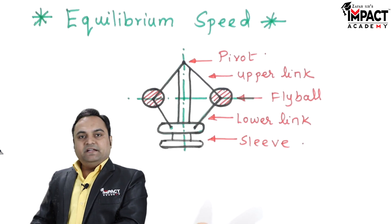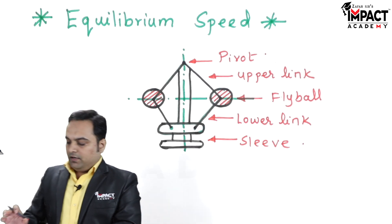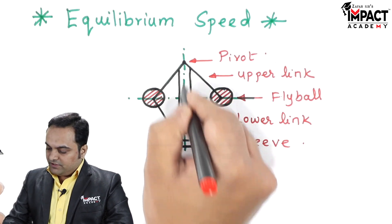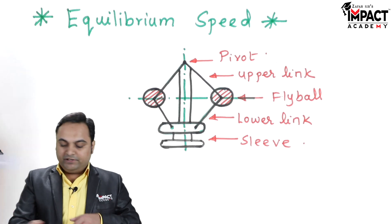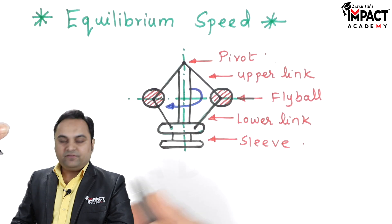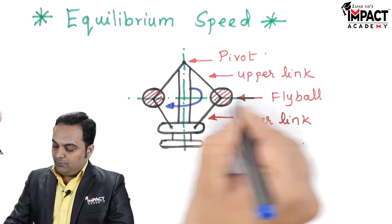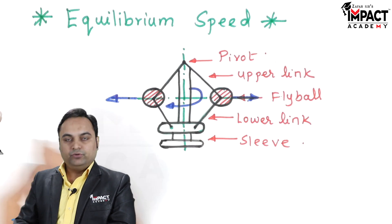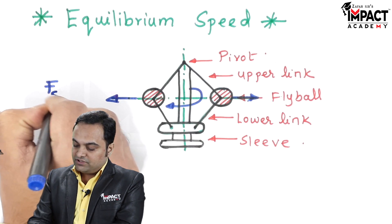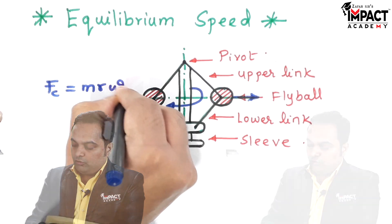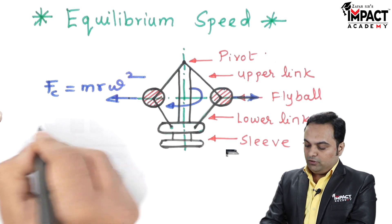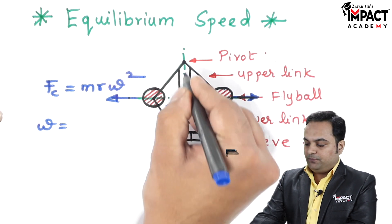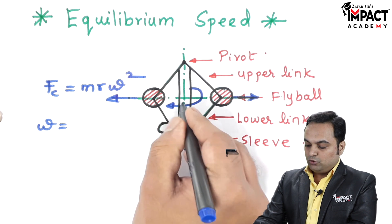So here is the simple line diagram of a governor. In this case, equilibrium speed will be where the spindle of the governor is continuously rotating. The fly balls are going to move away from the center due to the centrifugal force, which is given by F_c = mr𝜔², where 𝜔 is the angular rotation or angular speed of this spindle which is rotating.